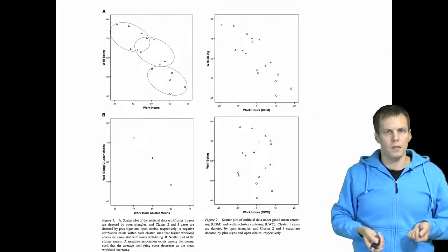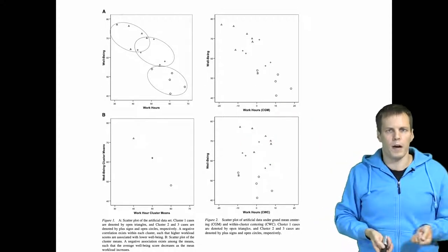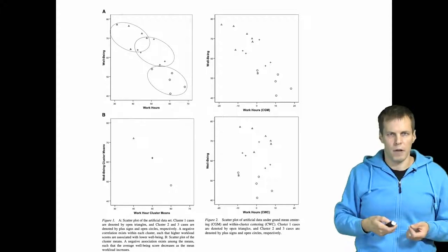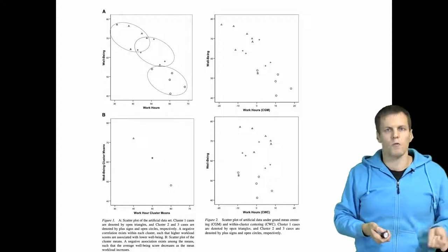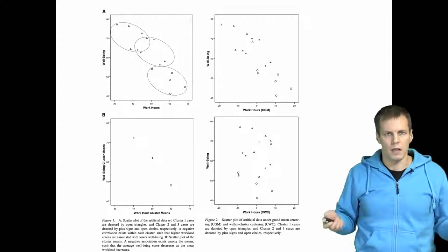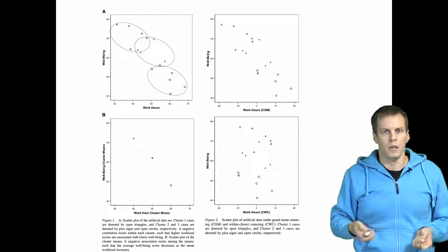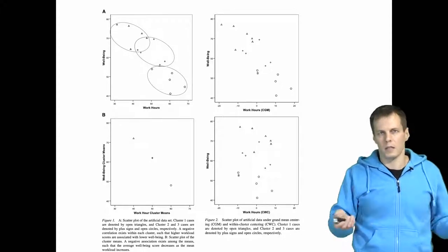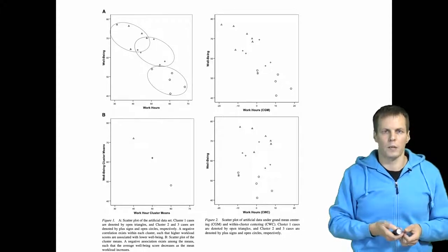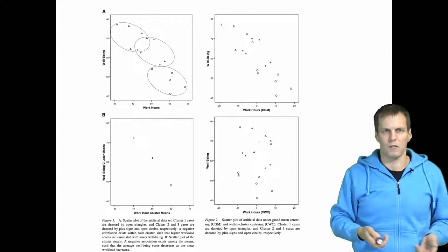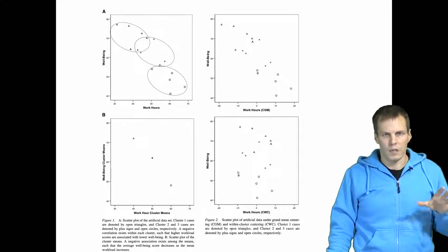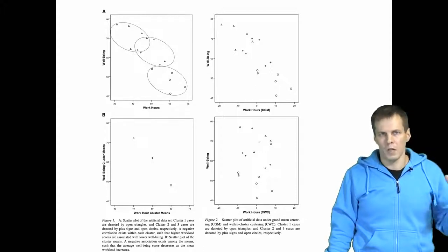Applying centering to a dependent variable is problematic because it reduces the variation of the error term and causes your standard errors to be inconsistent and biased — and whether the bias is large or not depends on the number of clusters and number of observations. As a rule of thumb, you should never center the dependent variable.